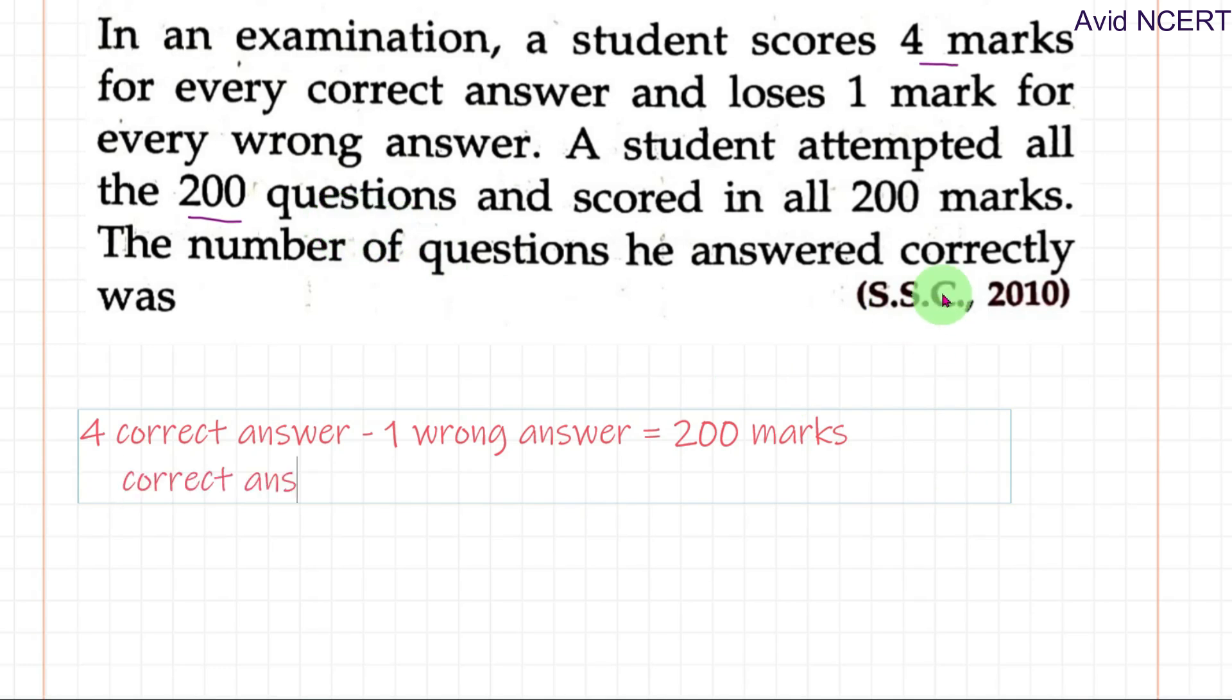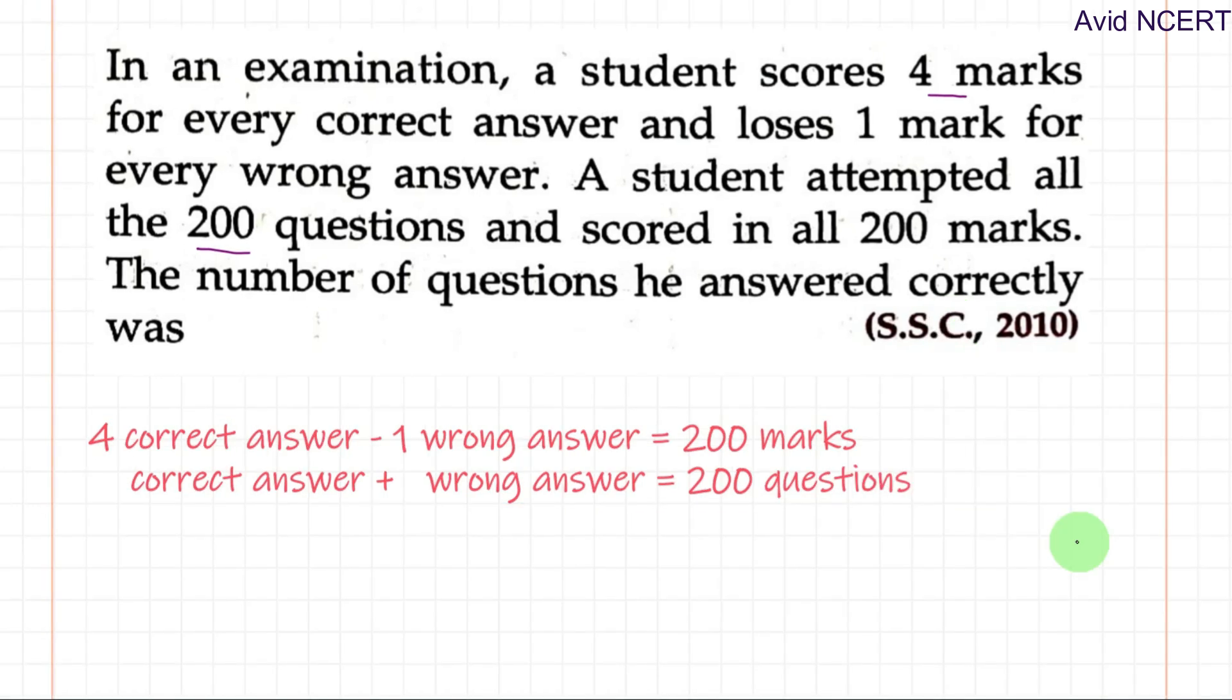Therefore, total correct answer plus total wrong answer will be equal to the total number of questions which equals 200 questions. So we have two equations now. First equation which is 4C minus 1W equals 200 marks.